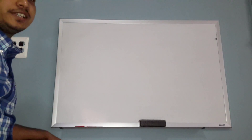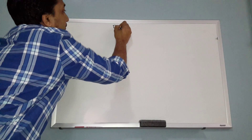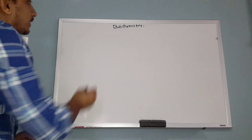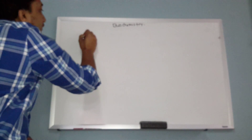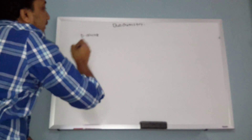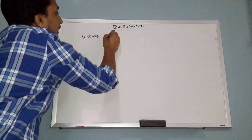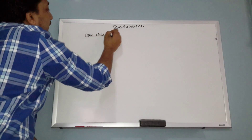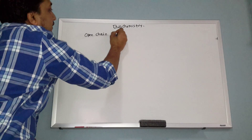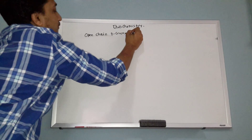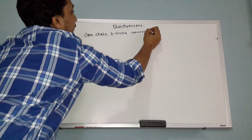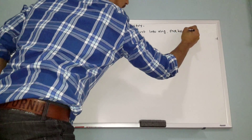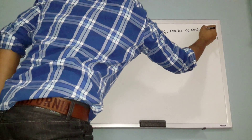Hello everyone. Today my subject is biochemistry, and my topic is the glucose — specifically, how open chain D-glucose converts into a ring to make alpha and beta structures.